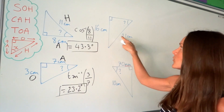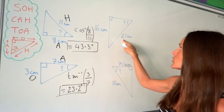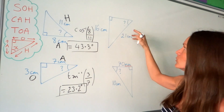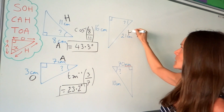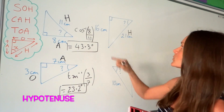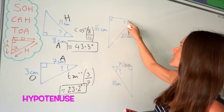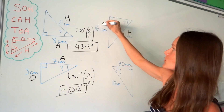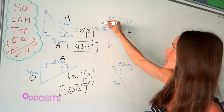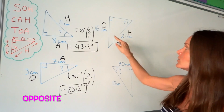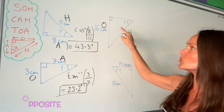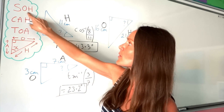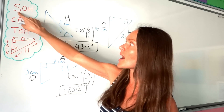For the third one, label the two sides as before. The side opposite the right angle is the hypotenuse. The other side is opposite the angle we're trying to find, so that's the opposite. The function that uses opposite and hypotenuse is sine.